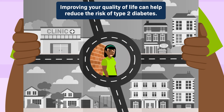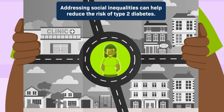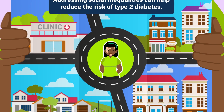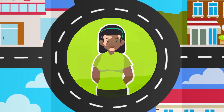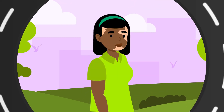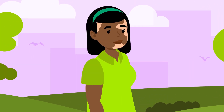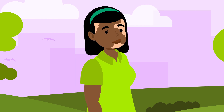Addressing the higher rate of type 2 diabetes in these communities requires changing the social policies that continue to put them at risk. It also requires providing access to better education, economic stability, health care, and physical environments — the social determinants of health. This would allow these communities to access an overall level of health and quality of life that would reduce the risk of type 2 diabetes.